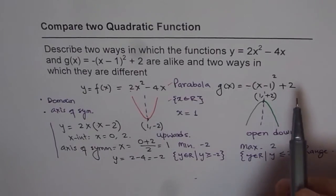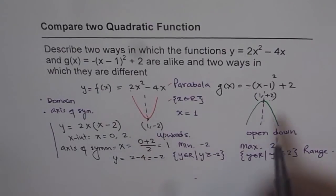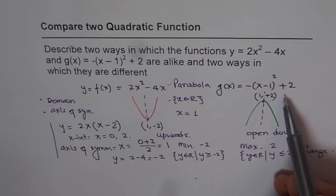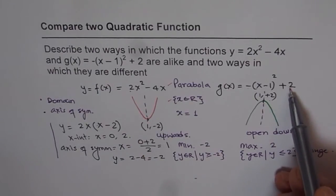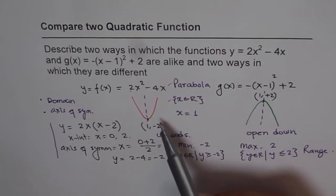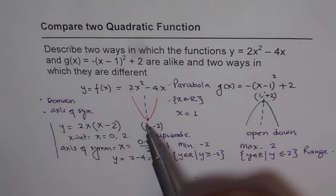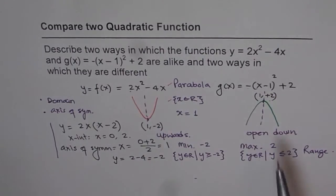So these 2 similarities we could have given without doing any calculations. And as far as differences are concerned, we could have said one has a maximum point, the other one has a minimum. For one, the range is less than or equal to 2, and for the other, we might have to do calculation. But we say restriction is towards the minimum point. Here, the restriction is towards maximum point.